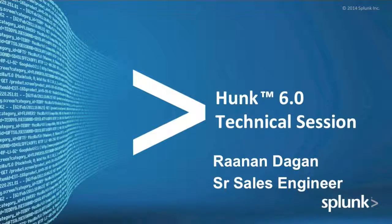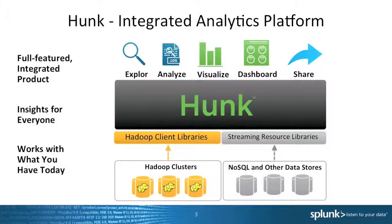Hunk 6.0 is a technical platform created to help Hadoop users build analytics and visualization dashboards on top of Hadoop data stores. In Hunk 6.1, a feature was added that allows data stores like Cassandra, MongoDB, HBase, and a few others to also serve as the data store for Hunk.